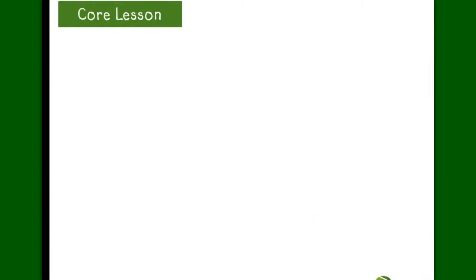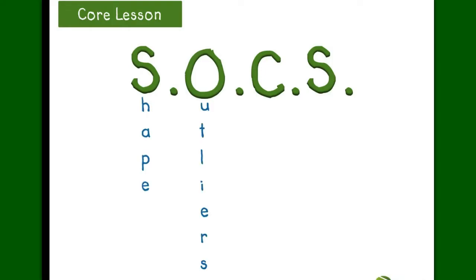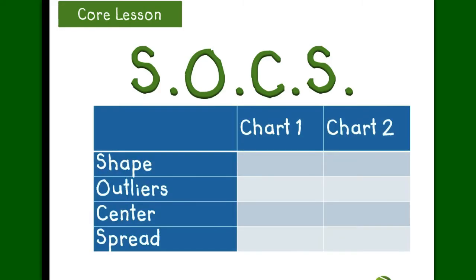When looking at and comparing data, you always want to talk about the SOCS. That is, the shape, outliers, center, and spread. Depending on how you like to organize, you can simply make a SOCS chart to organize and keep track of your thoughts on each of the categories.